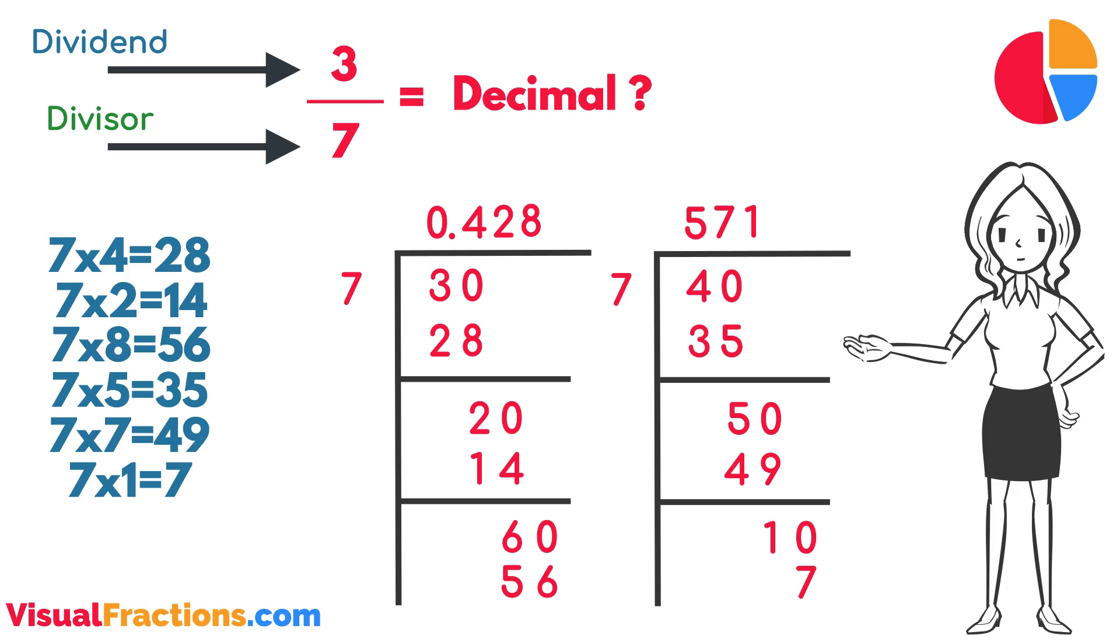We stop at 0.428571 for this explanation, but if we continue the division, the digits after the decimal point start to repeat, forming a recurring decimal.